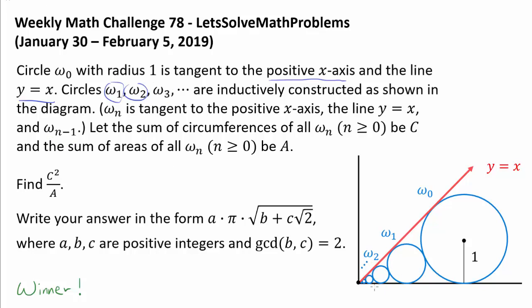So we are going to keep on doing it on and on. Let the sum of circumferences of all ωₙ for n ≥ 0 be C, and the sum of areas of all ωₙ be A.